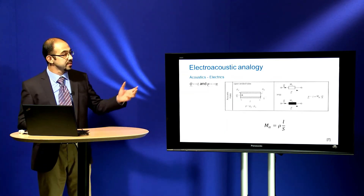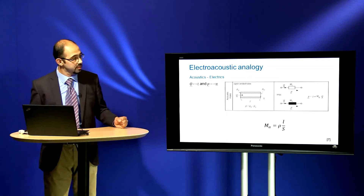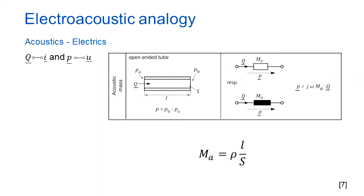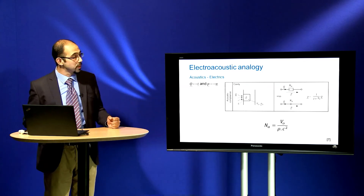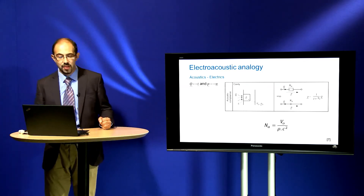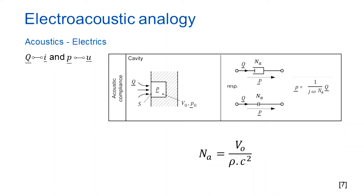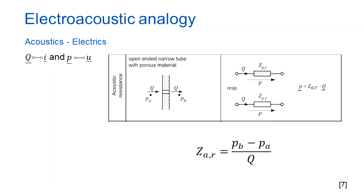For the first element, acoustic mass, the dimensions of the open-ended tube — the length and the diameter — are very important. For acoustical compliance, the volume of the cavity is critical. And the ratio between the sound pressure and the volume velocity is important for the acoustical resistance.